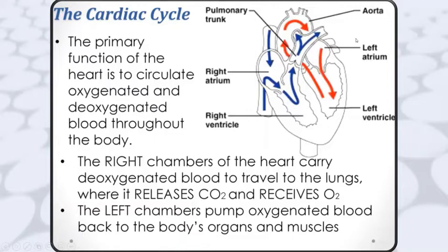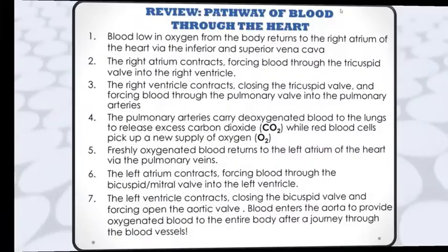The oxygenated blood enters into the left atrium through the pulmonary vein, and from there it enters into the left ventricle, then into the aorta. From the aorta, it enters into the various parts of the body. That is the cardiac cycle.